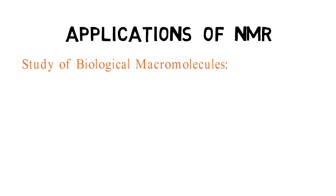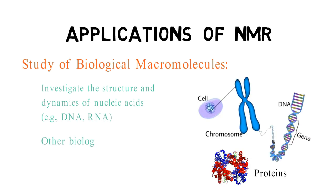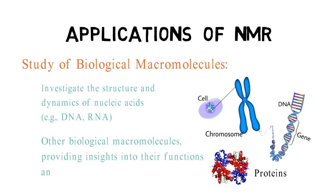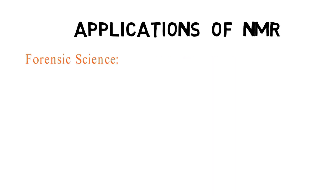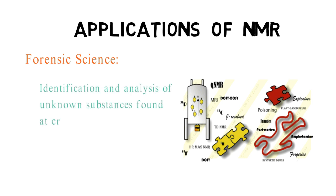NMR is used to investigate the structure and dynamics of nucleic acids, such as DNA and RNA, and other biological macromolecules, providing insights into their functions and interactions in living organisms. NMR is also used in forensic laboratories for the identification and analysis of unknown substances found at crime scenes, such as drugs, poisons, and trace evidence.